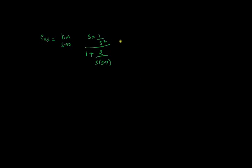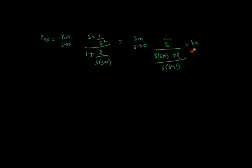Let's simplify. We get: limit as s→0 of (1/s) / [(s(s+1) + 2) / (s(s+1))]. This simplifies to: limit as s→0 of (1/s) · s(s+1) / [s(s+1) + 2], and the s cancels.